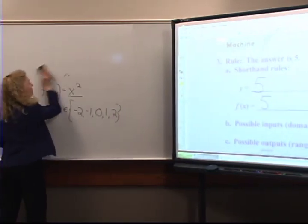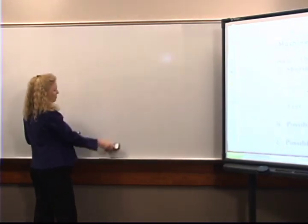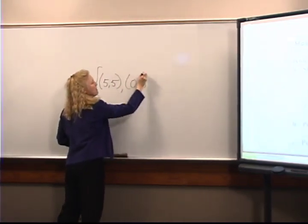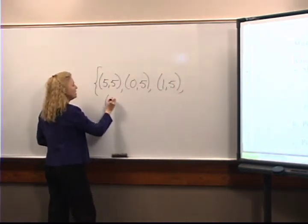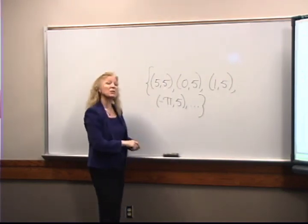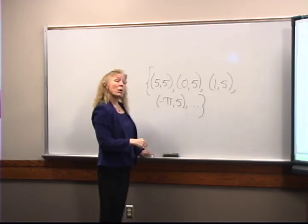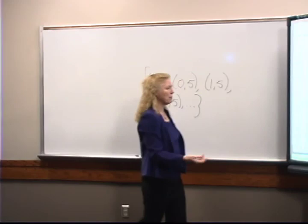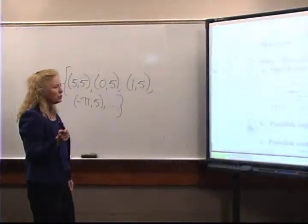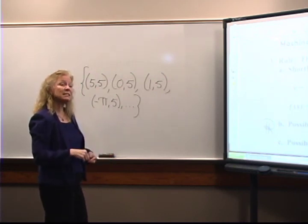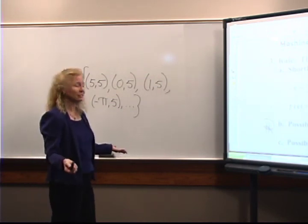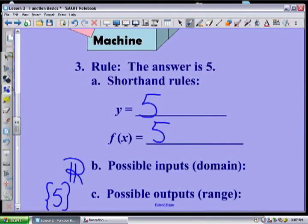I can actually put anything in — the weird thing is they all go to the same place. If I was going to write some ordered pairs, I could have (5,5), (0,5), (1,5), (-π,5) — pick any number you like for the x coordinate, the y is always five. So my domain is all real numbers. Now I'll ask you to ponder the range — if the range is the set of all outputs, my range is simply the number five.